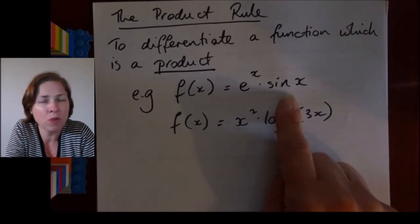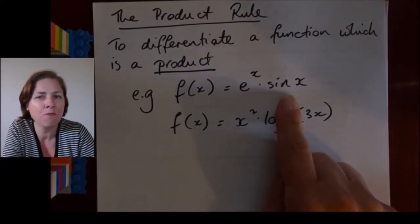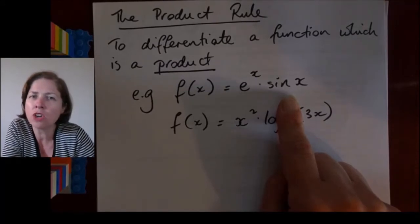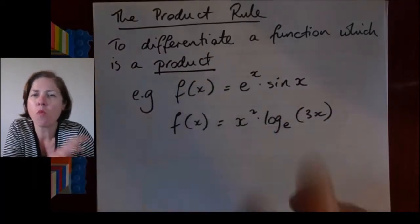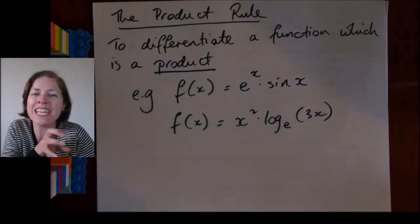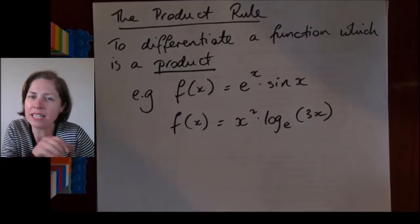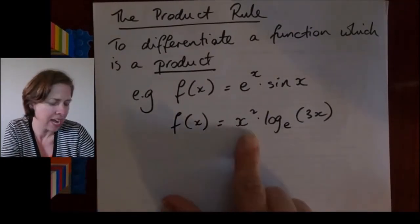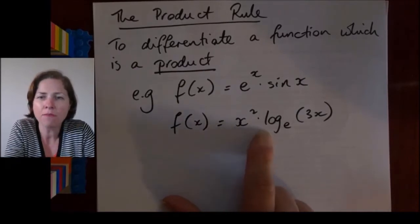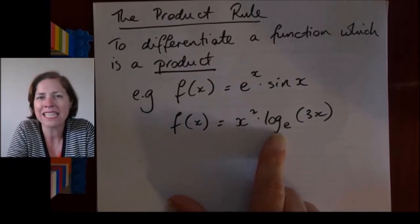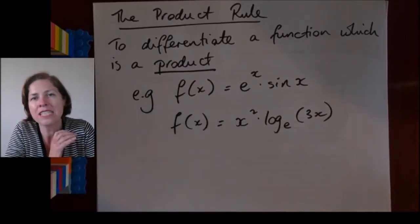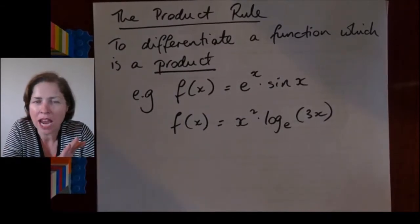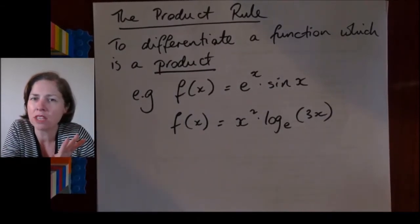At the moment we don't have any method for differentiating this. We can't use the chain rule because it's not a composite function - one function is not inside the other, they're multiplied together. Same in this example: f(x) equals x squared times log base e of 3x. Because these are multiplied together, I can't use the chain rule - I'm going to need a new method.